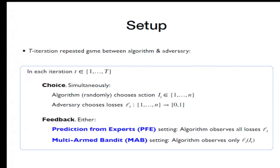The type of feedback it receives depends on the setting we're in. If we're in the expert setting, the algorithm observes losses for all the actions. This is often called the full information setting. In the bandit setting, the algorithm observes only loss of the action it took.